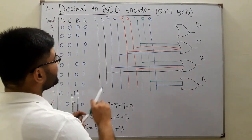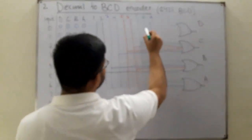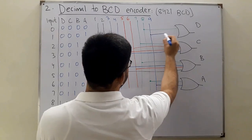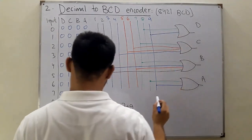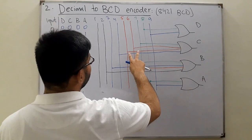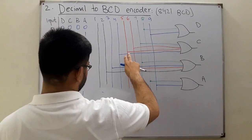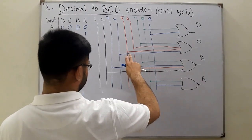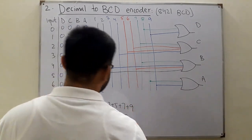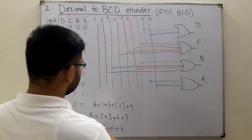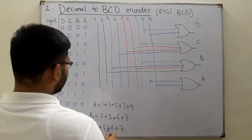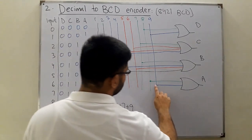Correcting the diagram: D has eight and nine. C has four, five, six, and seven. B has two and three.